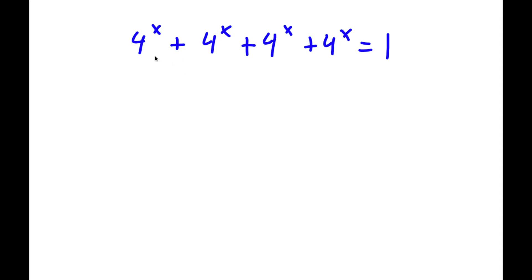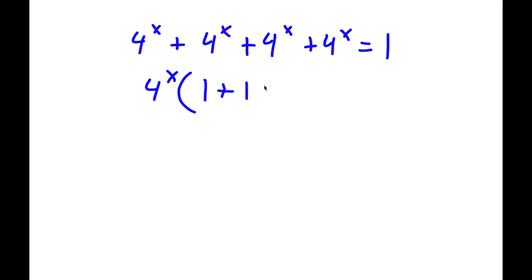Now the first thing I'm going to do is, because my left hand side has all terms being 4 to the power of x, I'm going to factor out 4 to the power of x. So now I have 4 to the power of x times — well, 4 to the power of x divided by 4 to the power of x is 1, because anything divided by itself is 1. And because all my terms are 4 to the power of x, I have 1 plus 1 plus 1 plus 1, and this is equal to 1.